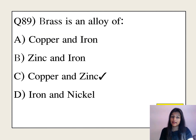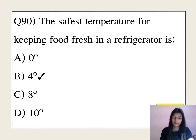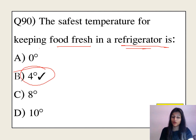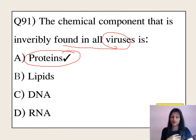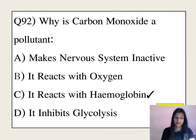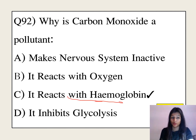Brass is an alloy of copper and zinc — when you mix copper with zinc you get the alloy brass. The safest temperature for keeping food fresh in a refrigerator is 4°C. The chemical component invariably found in all viruses is proteins. Carbon monoxide is a pollutant because it reacts with hemoglobin.